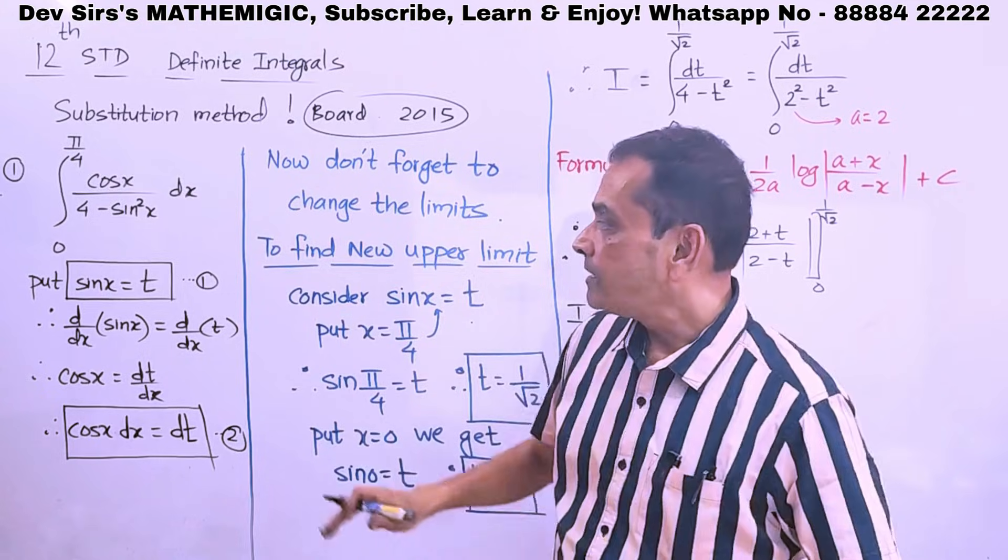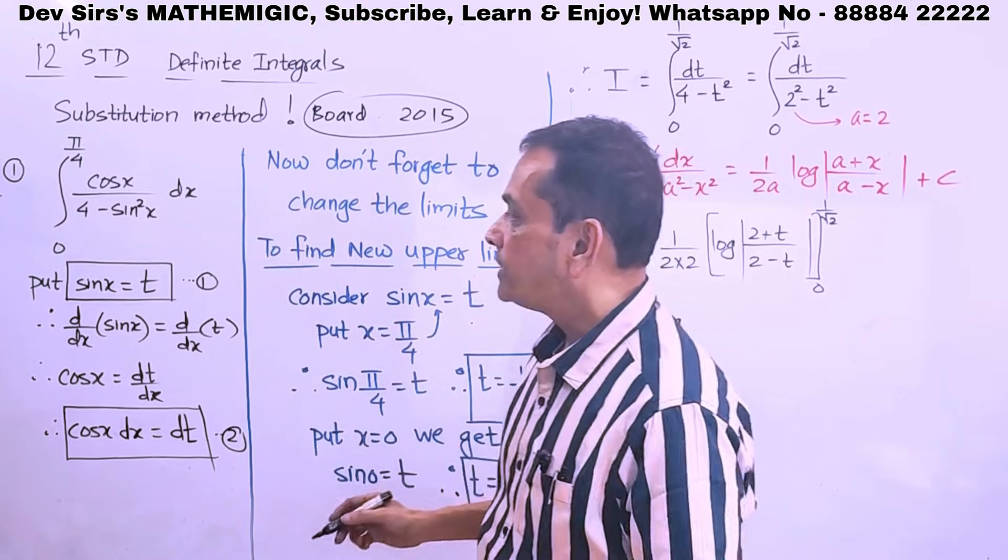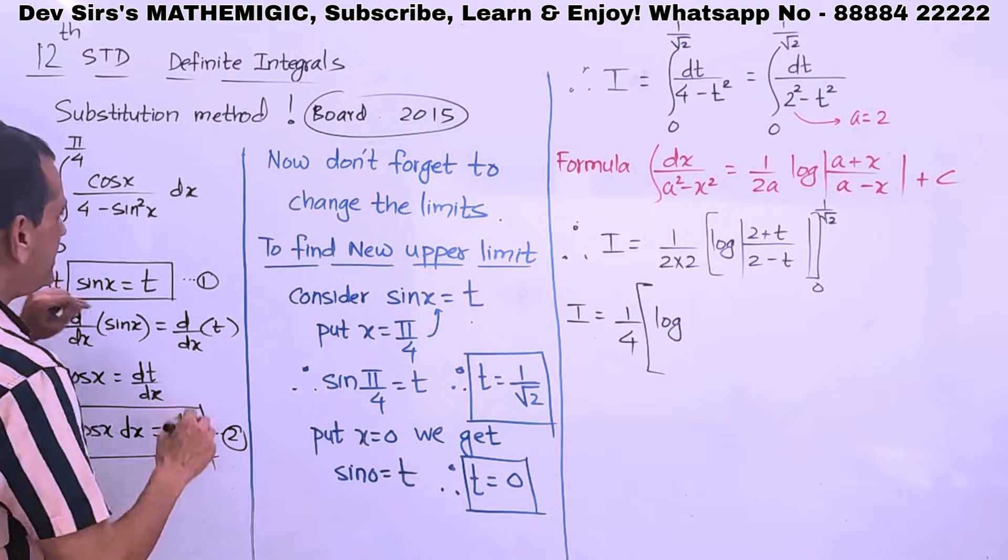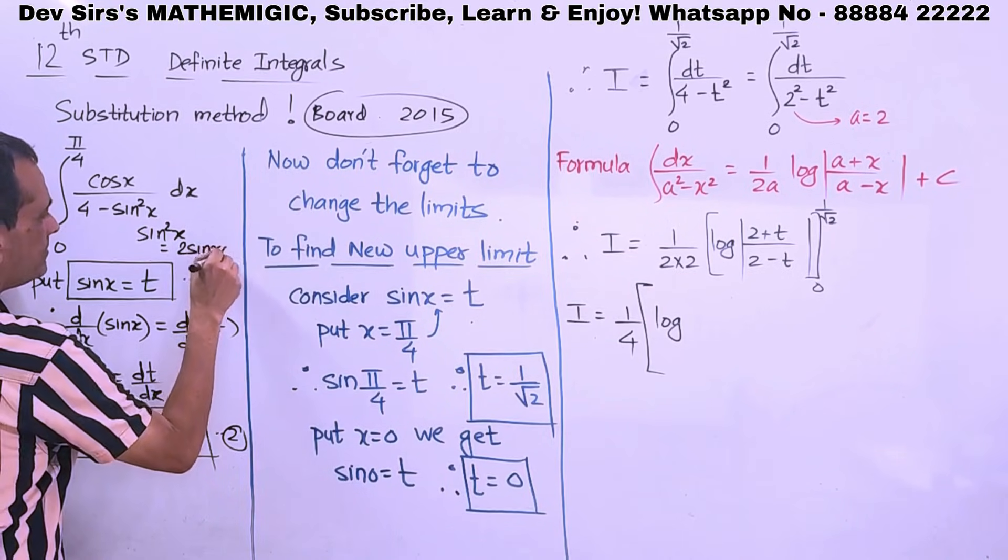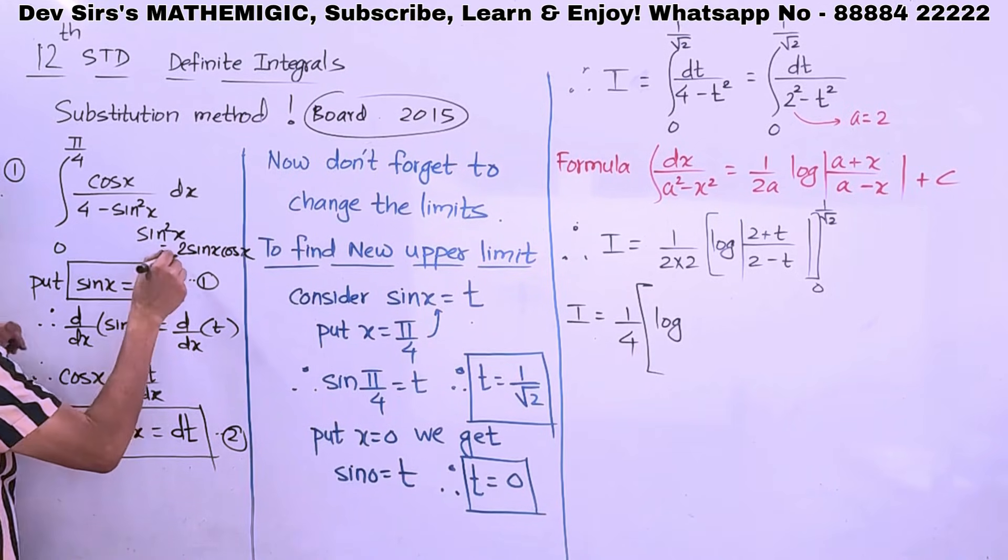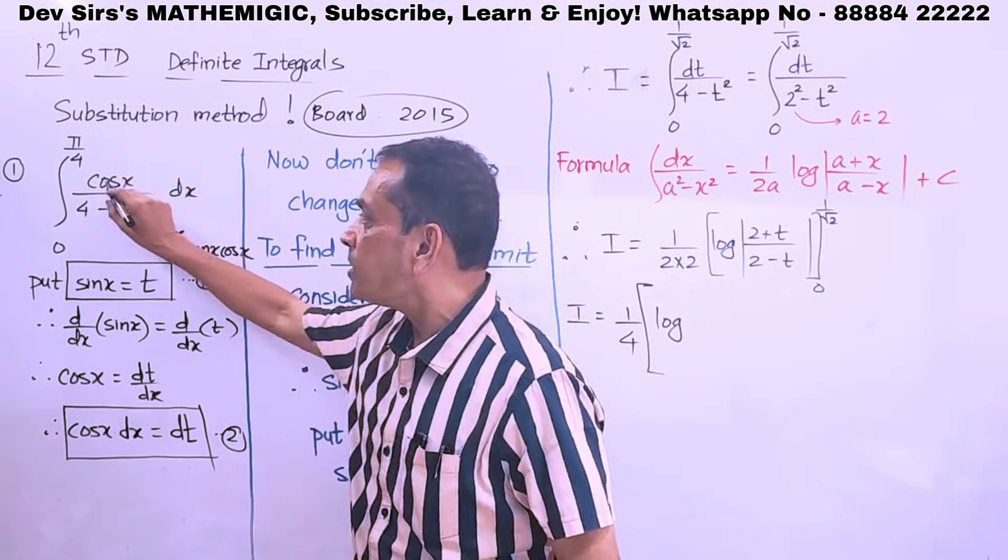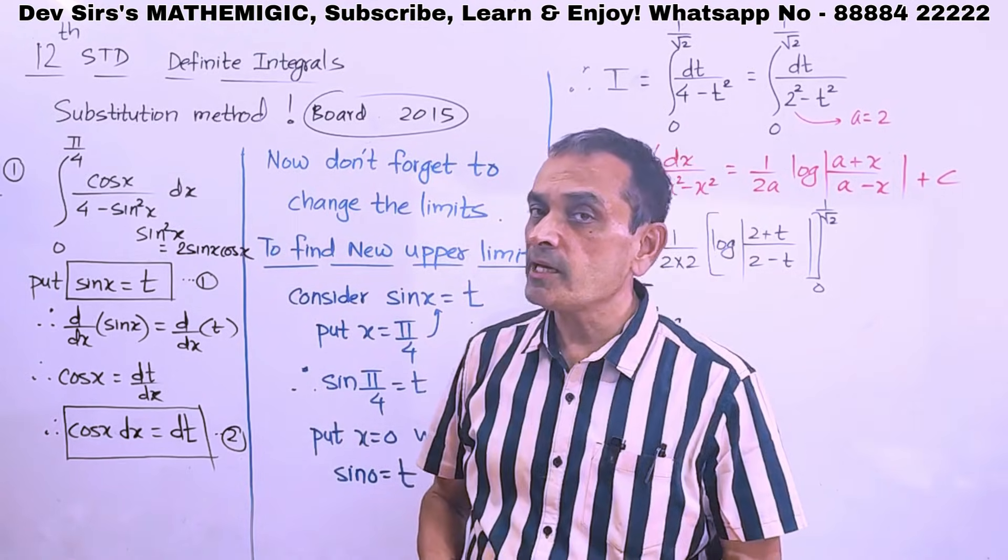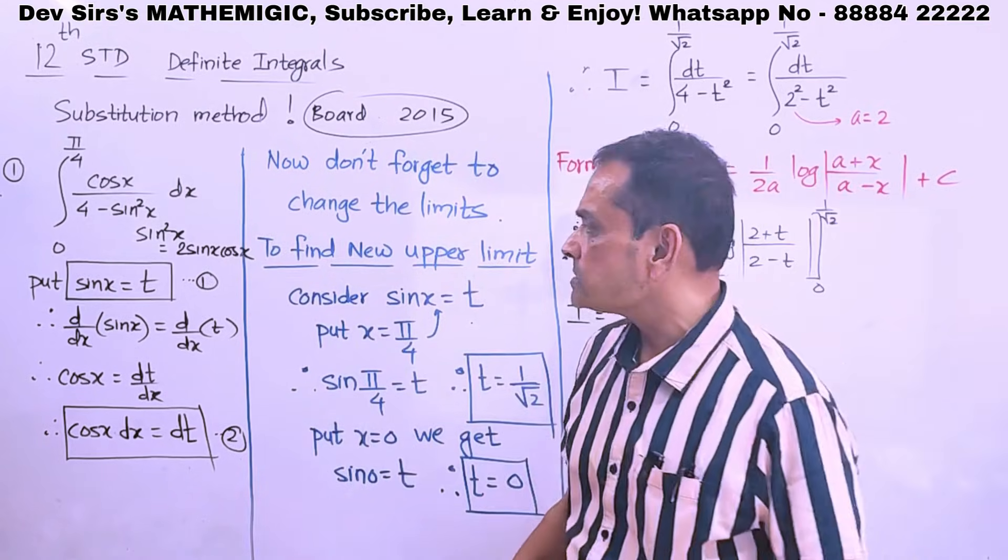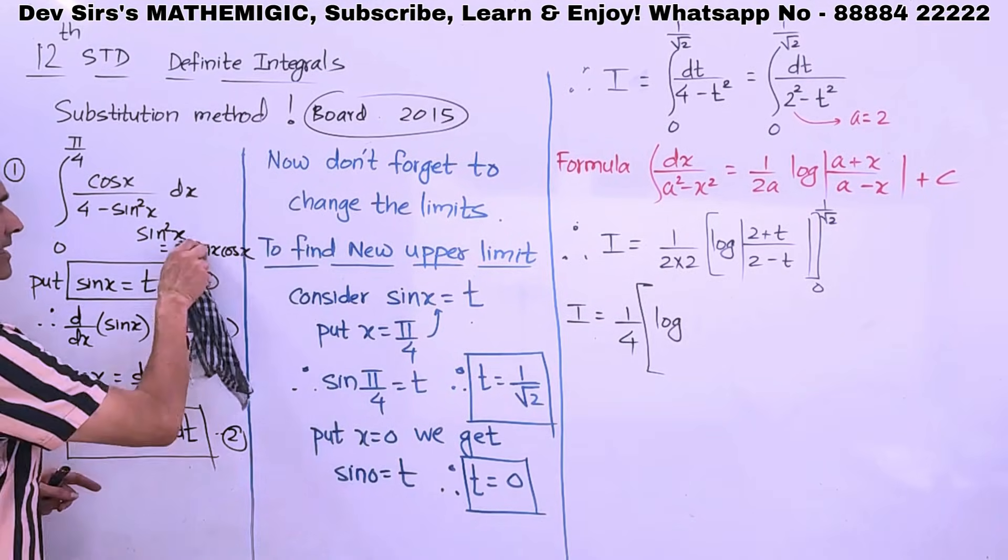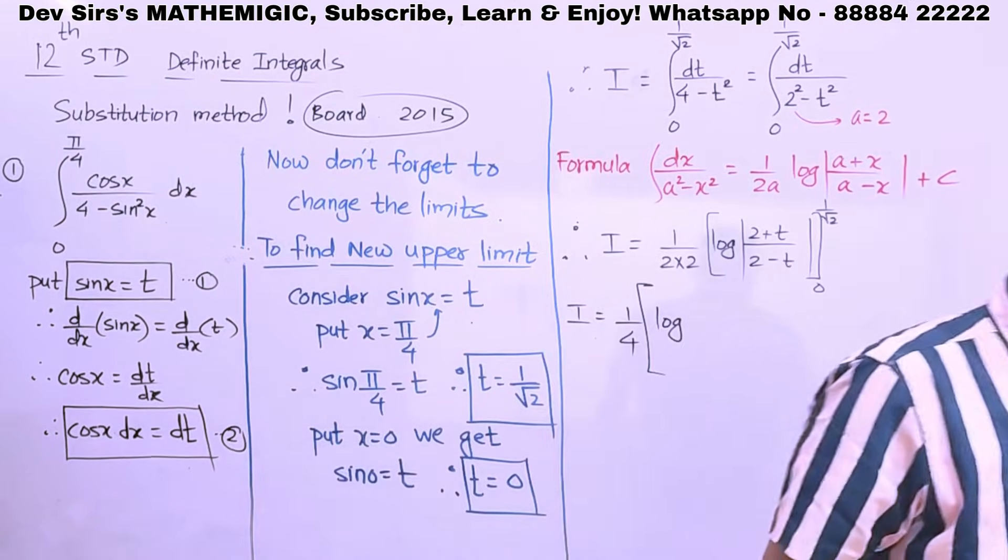Now, the thing is, you might ask, why don't we substitute sin squared x equal to t? If we substitute sin squared x equal to t, then derivative of sin squared x is 2 sin x cos x. 2 sin x, derivative of sin x is cos x. So, derivative of sin squared x is 2 sin x cos x which is not there in the numerator. 2 sin x cos x dx is not coming in numerator. That's why sin squared x equal to t substitution we don't do. Sin x equal to t is okay because derivative of sin x is cos x and cos x dx is present in the numerator. All concepts clear?